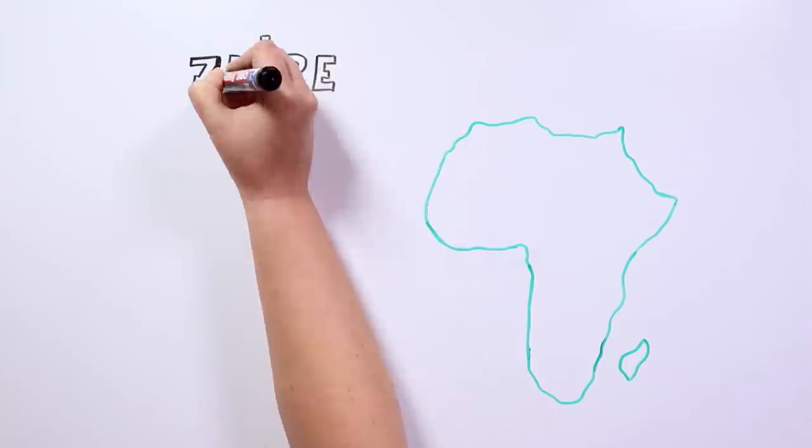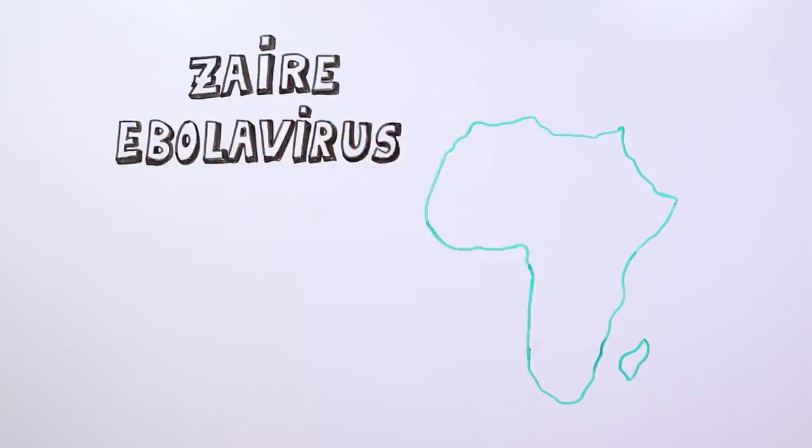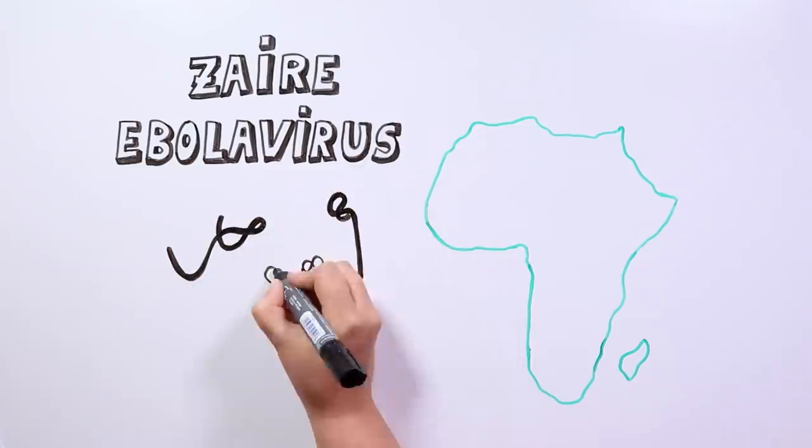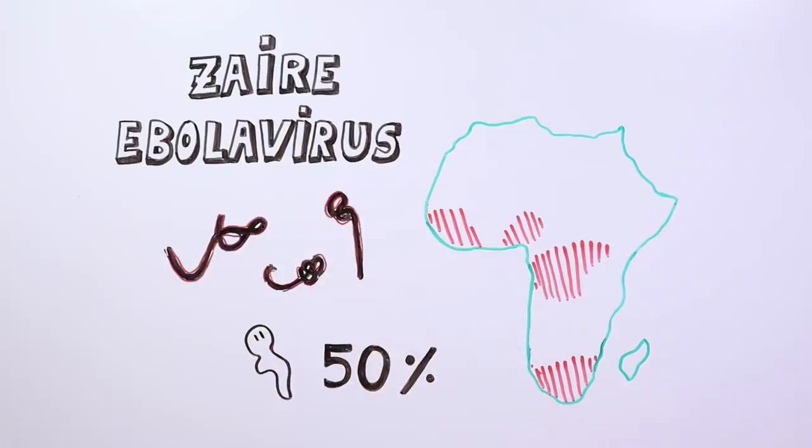Ebola also has a special impact on the African continent, a virus with a mortality rate of over 50 percent. It was first identified in 1976, and although some patients have been healed, there is still no final cure.